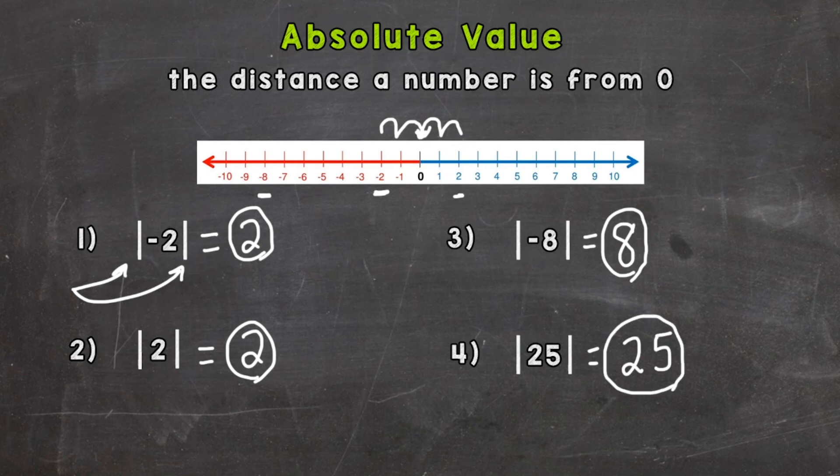So there you have it. Absolute value, just the distance a number is from zero. And those bars around the number just means to find the absolute value instead of writing out the words.